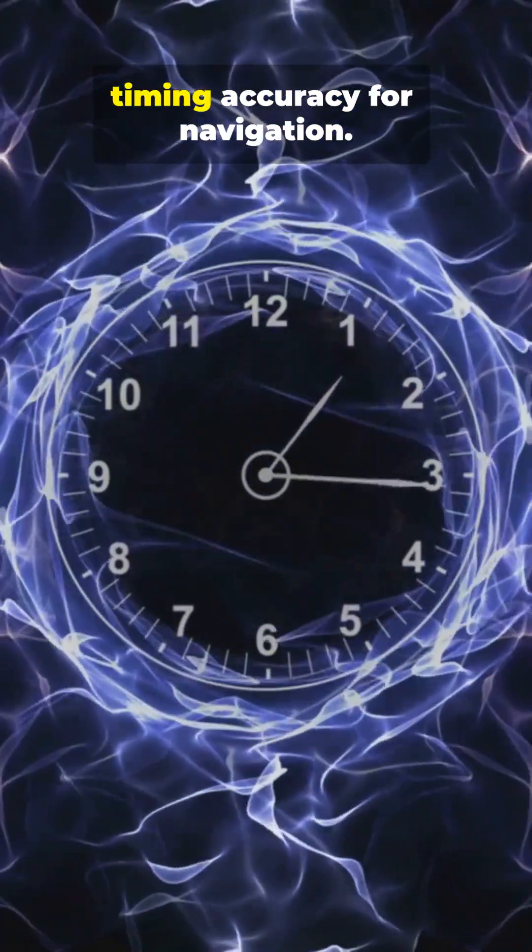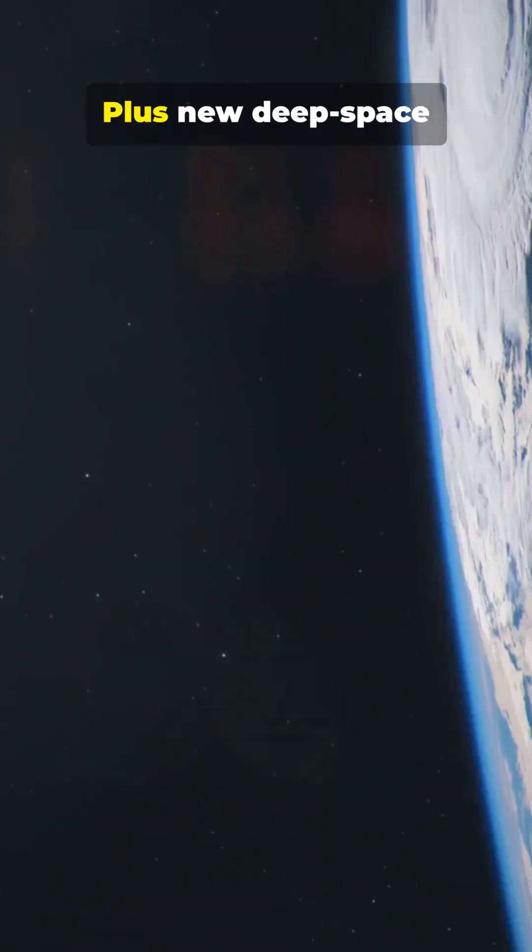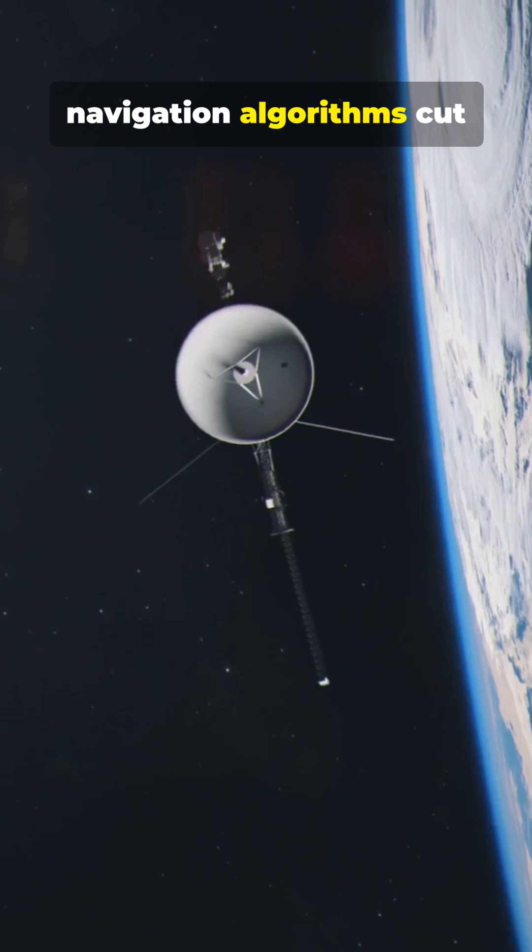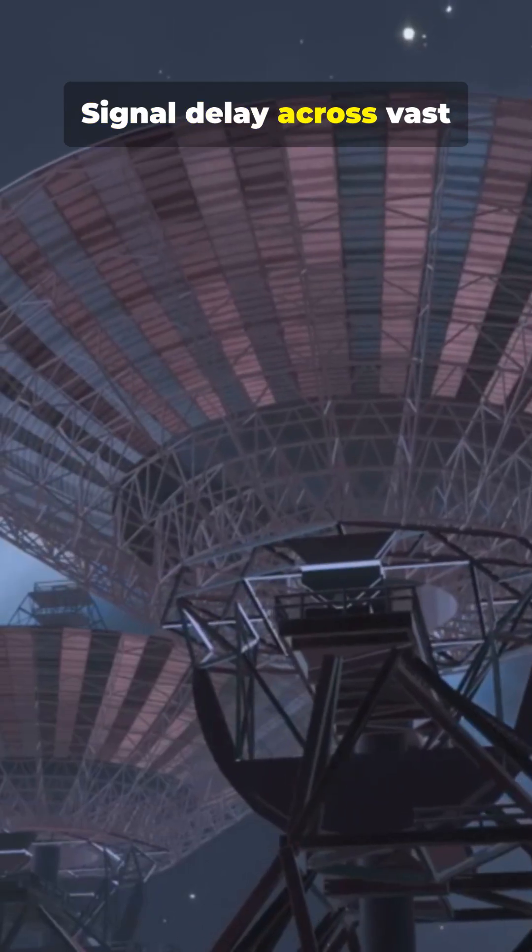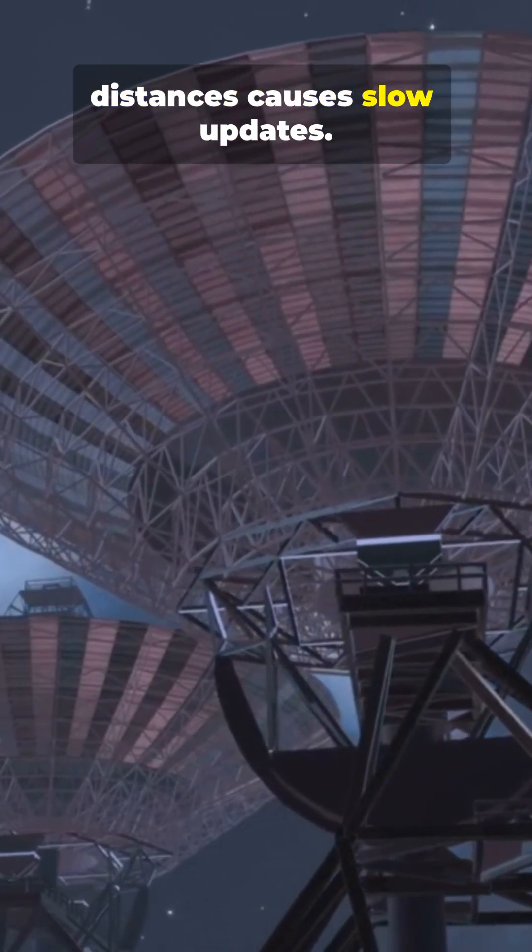Precise onboard clocks keep timing accuracy for navigation. Plus, new deep space navigation algorithms cut positional uncertainty. Signal delay across vast distances causes slow updates.